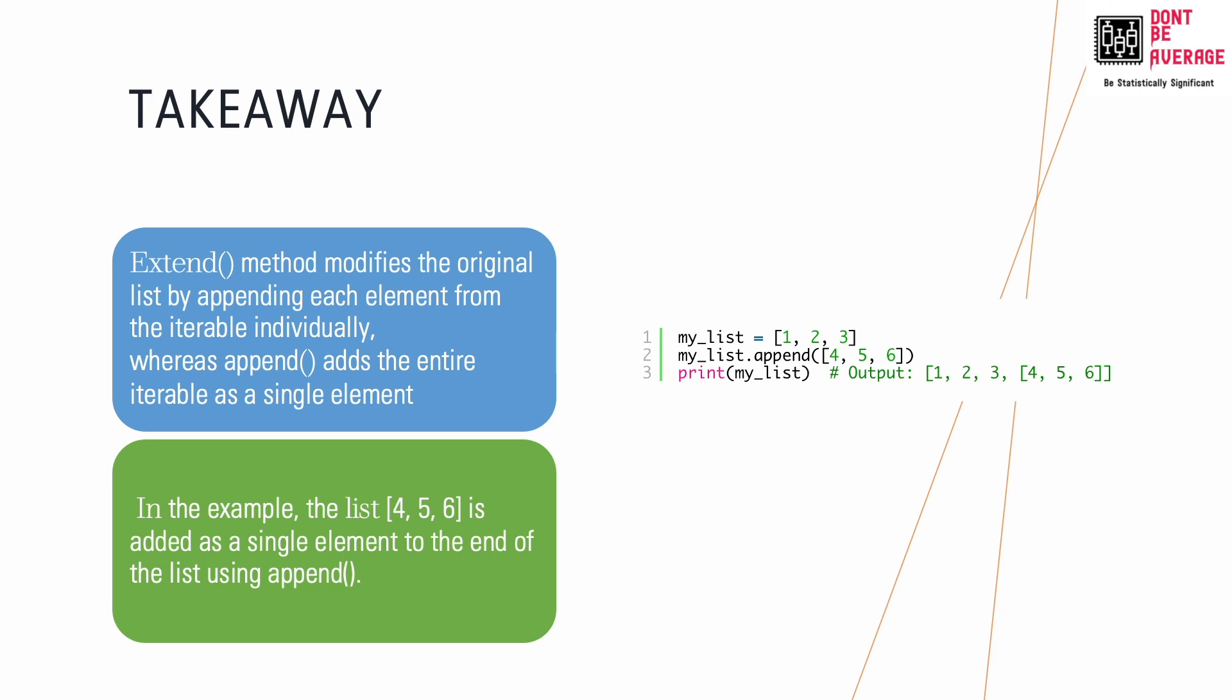As you can see here, instead of passing a single element, I've passed a list and applied the append method. What happened is it added the whole iterable as a single element, creating a nested list. That's what happens when you pass a list, tuple, or any iterable to append.